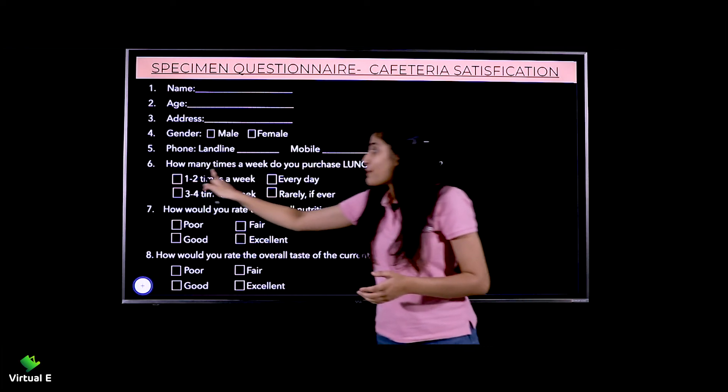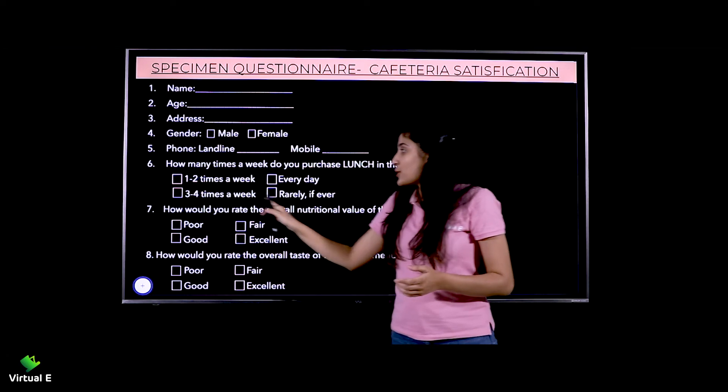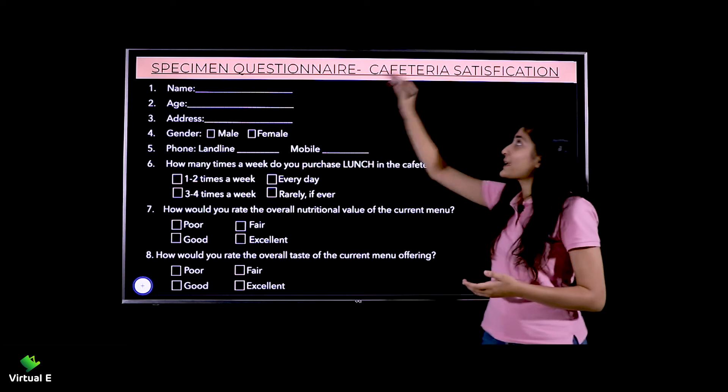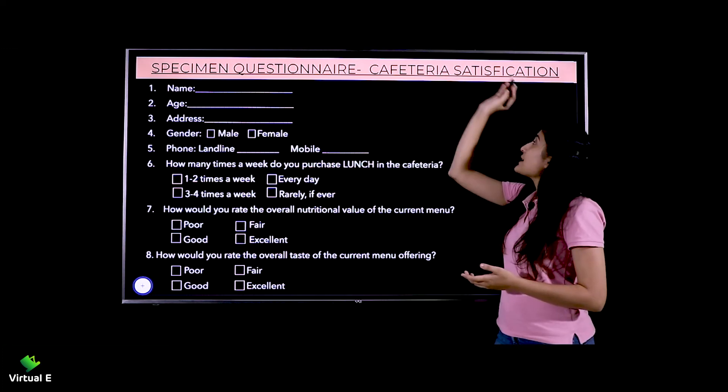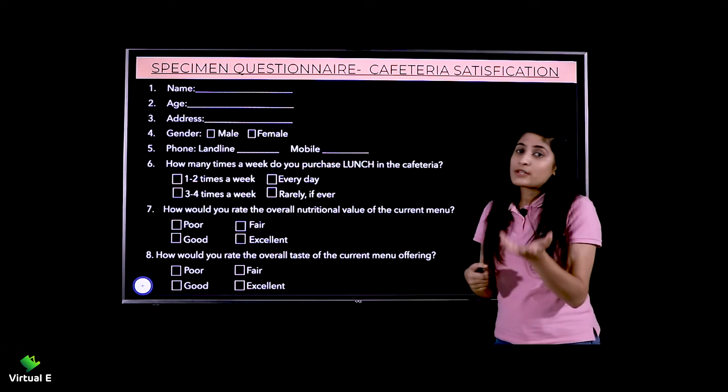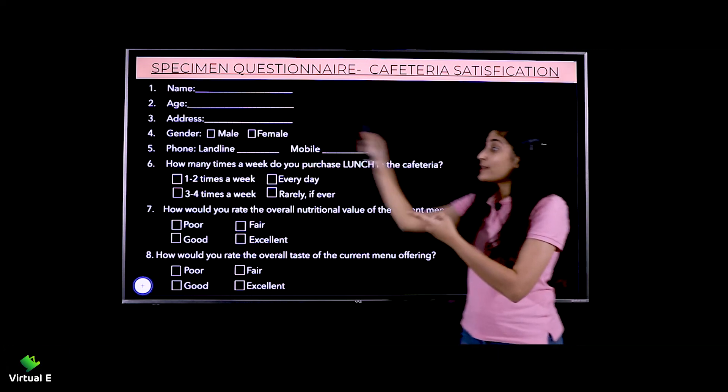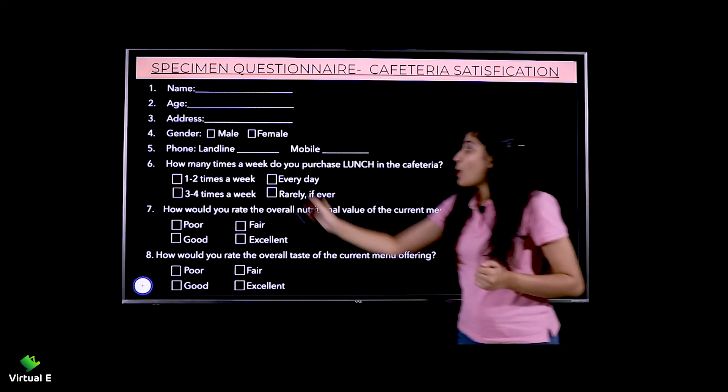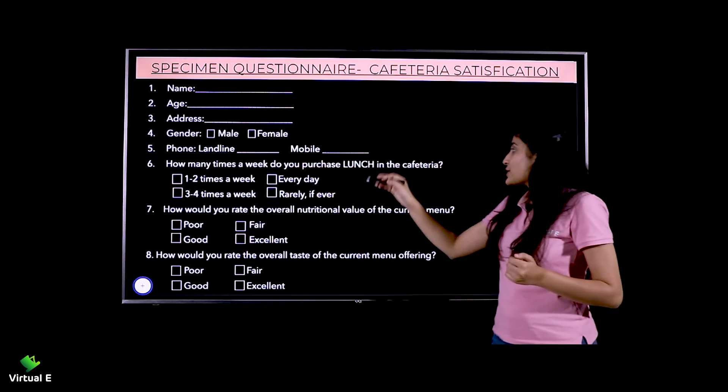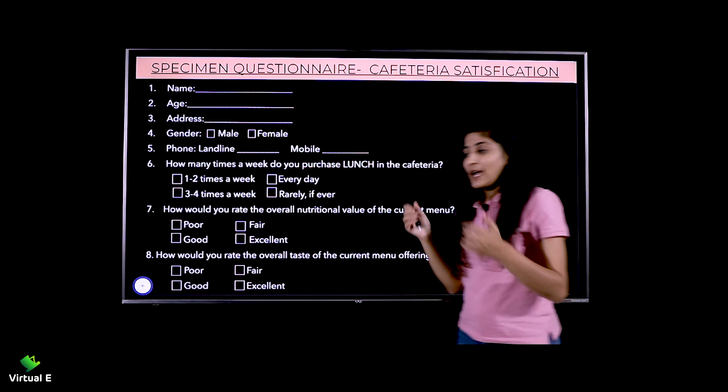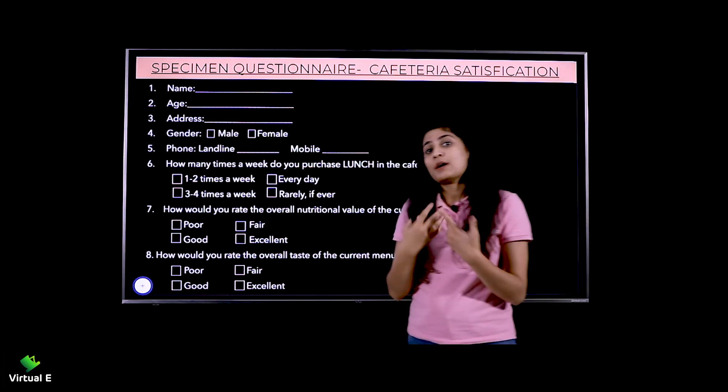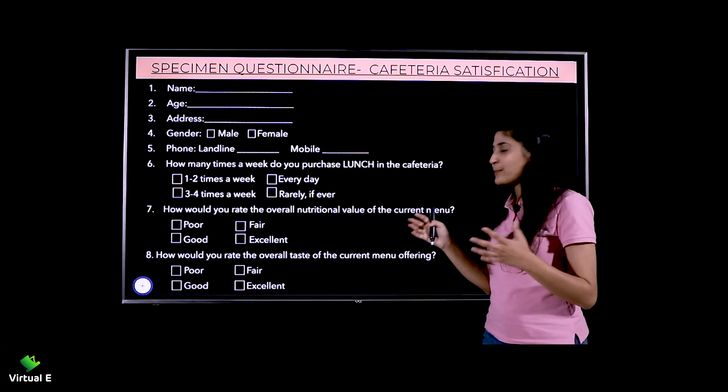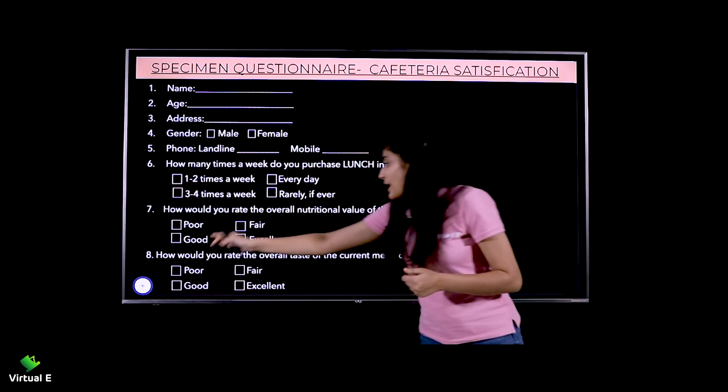Then you can ask about the topic you're collecting information on. Here I've chosen MCQ questions with four options. I've written at the top what I'm collecting for - cafeteria satisfaction. So they'll understand. As I showed you earlier about opening a cafe, I've taken a specimen on that. 'How many times a week do you purchase lunch in the cafeteria?' How many times do you purchase lunch in our cafeteria?